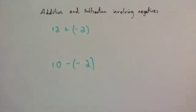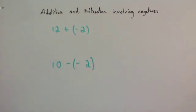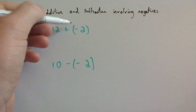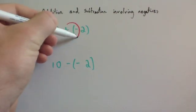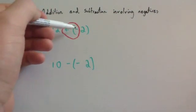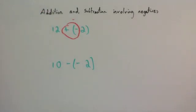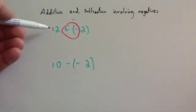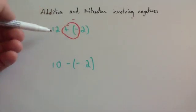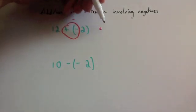First question: we've got 12 add negative 2. Because we've got two signs directly beside each other, we replace them with one single sign. They're different to each other, so you put in a subtract sign, giving 12 subtract 2. And 12 subtract 2 is equal to 10.